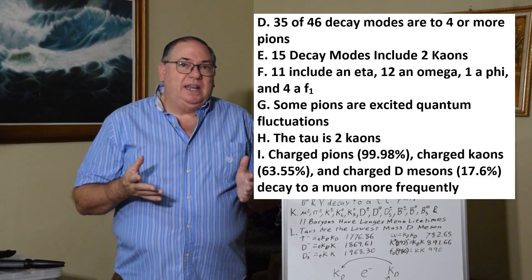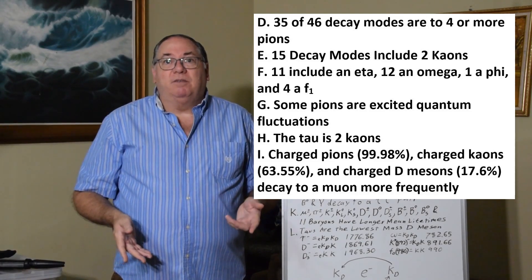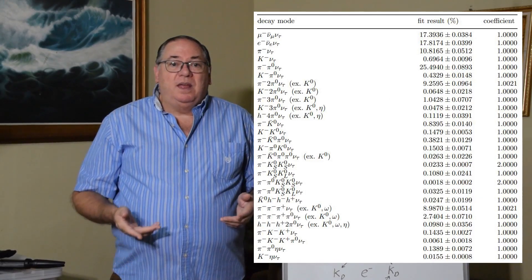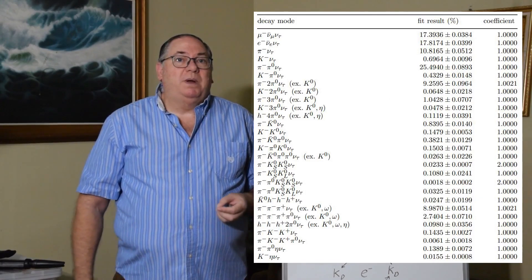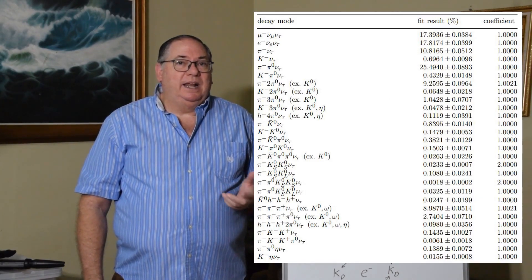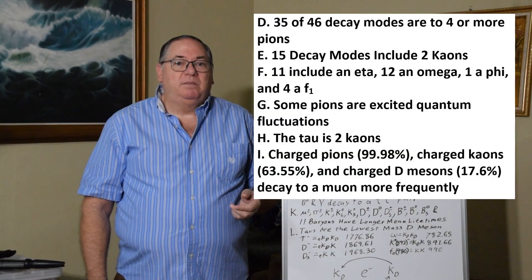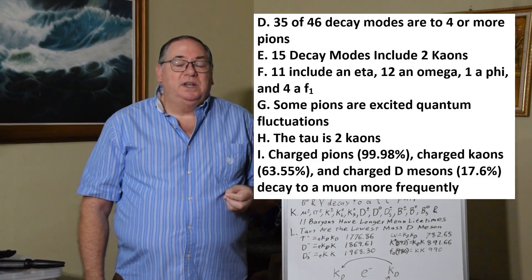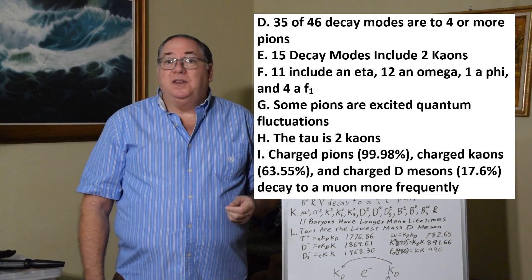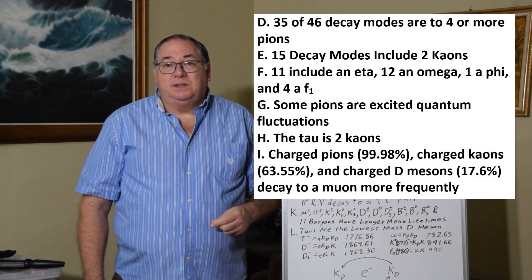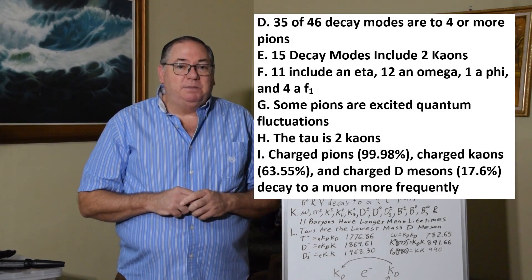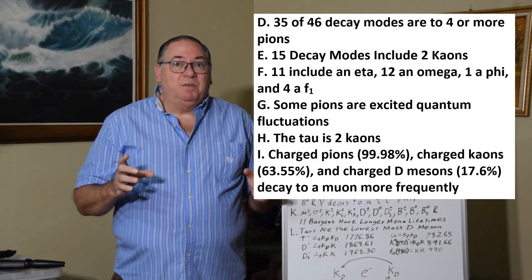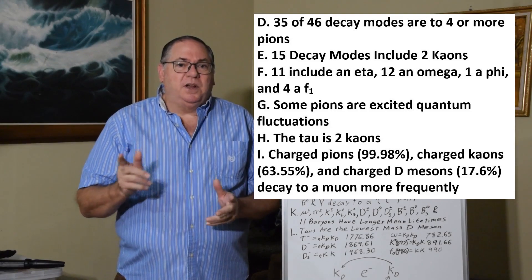So we can also see that based on a publication from the Particle Data Group from 2018 that I use on the tau, they have 46 different decay modes. 35% of those involve 4 or more pions, which tells us that a tau is more than just an excited muon. It's got at least 4 pions in it. And 15 of those decay modes include 2 k-ons, and k-ons decay to 2 pions. So once again, that's part of those that are 4 pions decays. But 2 k-ons tells us a lot, because we could, in an onium-type model, have k-onium, where 2 k-ons orbit each other. And I'll talk about that more in a bit.